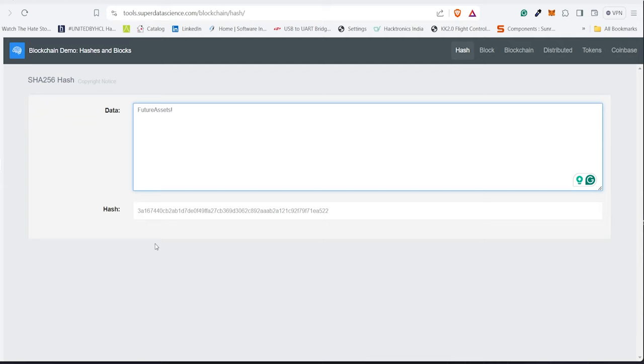We'll talk more about it just now, but the main point here is that making a slight change, the hash doesn't change just slightly—it changes completely. You can try removing the exclamation mark and putting a dot—this will create a completely different hash.